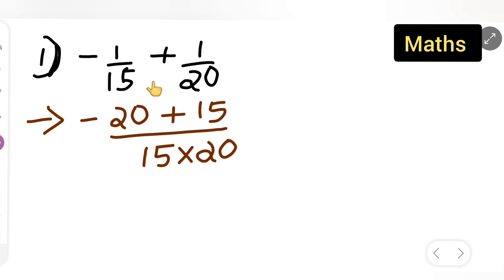So, you will have to multiply the denominator, cross multiply first, this will become minus 20, this will come here, positive 15 upon 15 multiplied by 20.